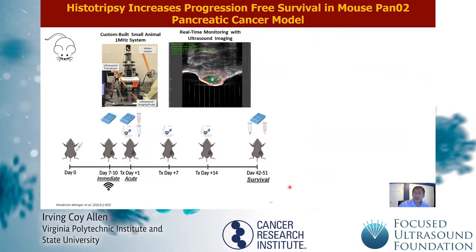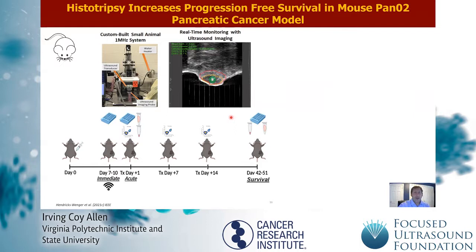To evaluate histotrypsy in the context of pancreatic cancer, we typically utilize rodent models such as the mouse panO2 model. This is a very well-characterized pancreatic cancer cell line from black six mice. We have generated a custom-built small animal histotrypsy system for our mouse treatments. This is an image of a pancreatic tumor — we are utilizing the subcutaneous model, so this is a subcutaneous pancreatic tumor outlined in red, our treatment zone outlined in orange, and the bubble cloud in green. We usually treat the animal seven to ten days after tumor implantation, based on tumor size, and we have multiple harvest time points across the time course.